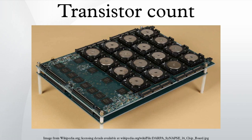Historically, each processing element in earlier parallel systems was a serial computer built out of multiple chips. As transistor counts per chip increased, each processing element could be built out of fewer chips, and later each multicore processor chip could contain more processing elements. For example, the Goodyear MPP had 8 pixel processors per chip, with 3,000 to 8,000 transistors per chip.